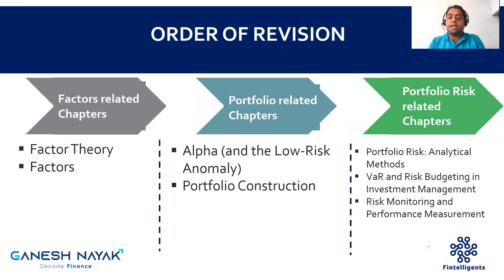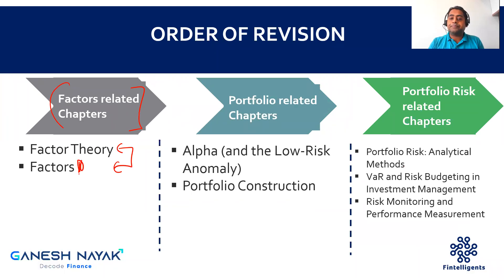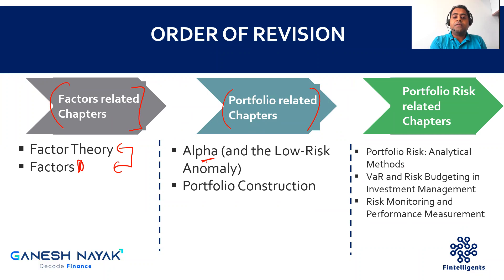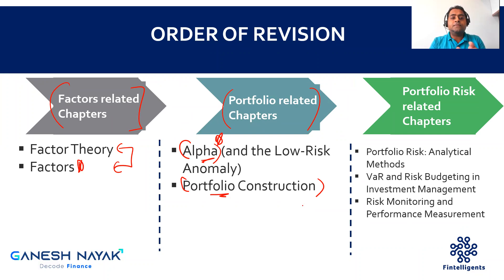Looking at the first bucket — factor-related chapters — this primarily includes factor theory and factors. Out of these two, factor theory is very very important for the exam. Moving to the second bucket, the portfolio-related chapters are more about constructing portfolios. The alpha chapter is slightly important for your exam, and for the portfolio construction chapter you should refer to either GARP materials or supplementary notes, as the concepts in Schweser are not explained as clearly as they could be.